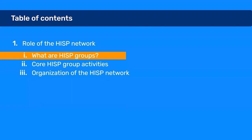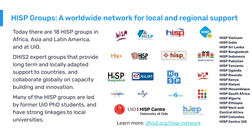We first start with a little bit of background and describe what the HISP groups are. Today there are 18 groups across Africa, Asia, Latin America, and here at the University of Oslo. These are DHIS2 expert groups that provide long-term and locally adapted support to countries, as well as collaborate globally on capacity building and innovation. Many of the HISP groups are led by former UIO PhD students and have strong linkages to local universities. You can read much more detail about the HISP network on our website, and on the right you can see all the HISP groups listed.